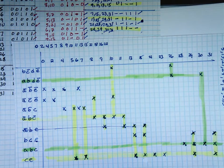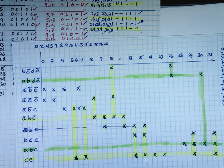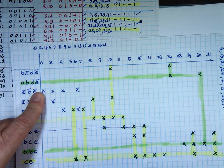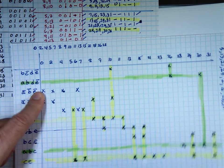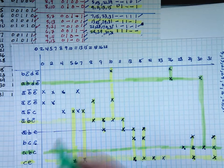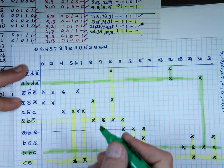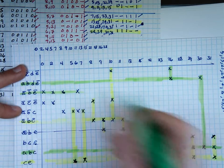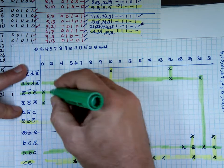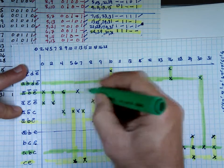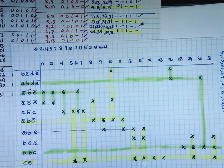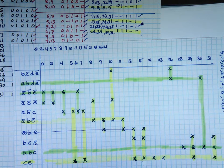That's gone. And the last one — the obvious choice is which one? A, B bar, D bar. Yep. The one below that. Because you can pick everything. Cover this, cover this, cover this, cover this, cover this. Anything else left?